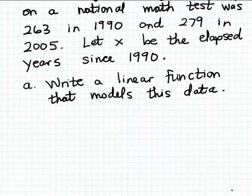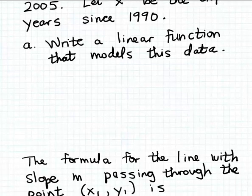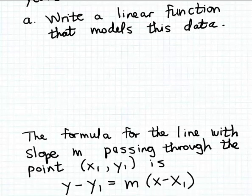Let's recall some formulas we can use to write down a linear function. The easiest one to use is the point-slope formula. The point-slope formula gives us the formula for a line with a particular slope m that passes through a given point (x₁, y₁).